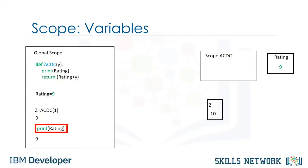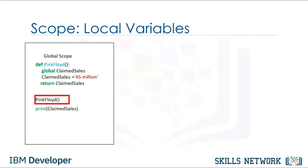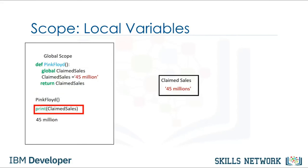The value of rating will be unchanged within the global scope. Consider the function pink_floyd: if we define the variable claimed_sales with the keyword global, the variable will be a global variable. We call the function pink_floyd — the variable claimed_sales is set to the string '45 million' in the global scope. When we print the variable, we get a value of 45 million. Check out the lab for more examples.